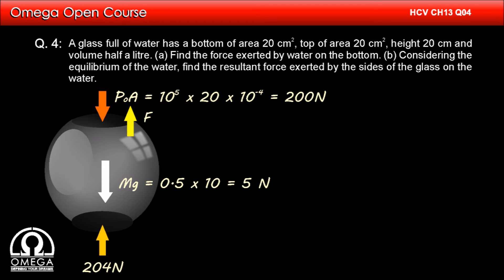And finally, the force by the side walls on the water, say F. Since the water is in equilibrium, net force on it must be 0 which implies 204 + F = 200 + 5 which implies F is equal to 1 Newton. This is our answer to the second part of the question.